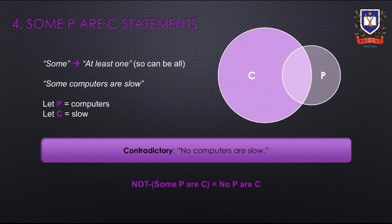Now let's go through 'some P are C' statements. Saying some P are C is the same as saying at least one P is a C. Note that it can mean all P are C. Consider the statement 'some computers are slow.' The Venn diagram shows this relationship where P represents computers and C represents slow. The contradictory of this statement is 'no computers are slow.'